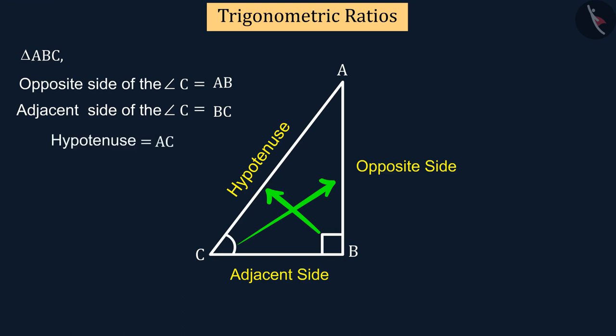The hypotenuse is AC, the opposite side is AB, and the adjacent side is CB. So in this video we will understand and learn the relationship between the sides and angles of a right angle triangle.